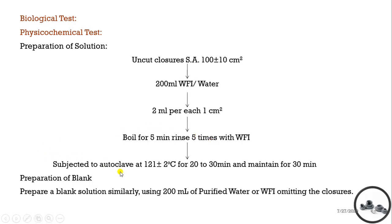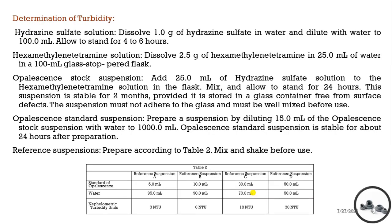Then it is subjected to autoclave at 121°C, taking around 20 to 30 minutes to attain temperature, and we maintain that temperature for 30 minutes. This will serve as the sample solution. The blank is prepared by subjecting water for injection to the same temperature and pressure conditions.